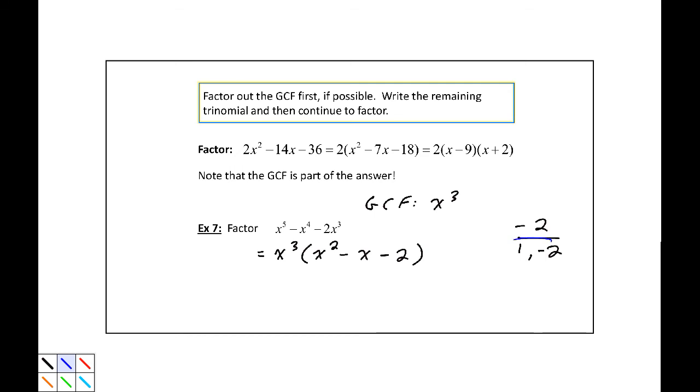Those are the values I want, so this will become x³ and then I'll have two sets of parenthesis. The first binomial will be x + 1 and the second binomial will be x - 2.